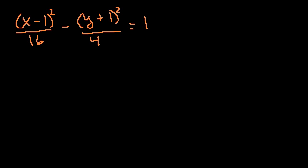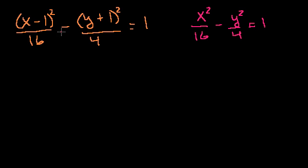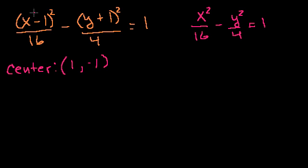The standard non-shifted form of a hyperbola centered at 0 would look like x squared over 16 minus y squared over 4 equals 1. The difference between this hyperbola and the shifted one is the center. The center of our hyperbola is at x equals 1, y equals negative 1, because those values make each term equal to 0. For the standard form, the center is at the origin, 0, 0.